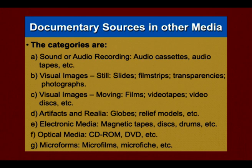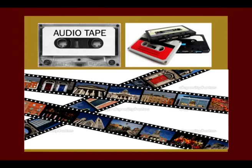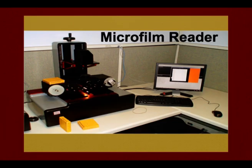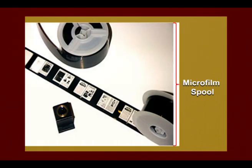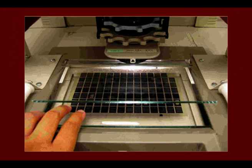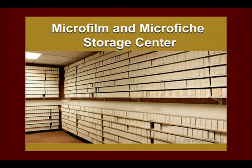These are different kinds of documentary sources in other media. There are audio tapes, a microfilm reader which used to be very popular in libraries, microfilm spools where each document or newspaper is photographed and run through the microfilm reader, and a microfiche machine where each page is cut into small pieces and viewed with a reader. There is also a typical microfilm and microfiche storage center, where materials are kept categorized based on different kinds of resources.